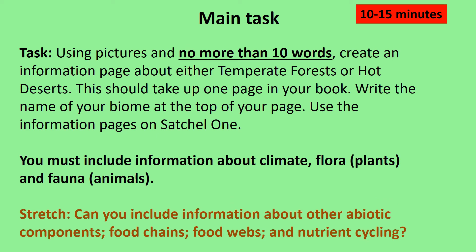Your main task for today: read through the information on Satchel One about temperate forests and hot deserts. Choose one of them and create an information page using no more than 10 words per point. You'll need at least half a page in your book. Pick out the keywords and choose the most important words that most accurately represent the information you've read about either one of those biomes. You won't be spending any longer than 10 to 15 minutes on this task.